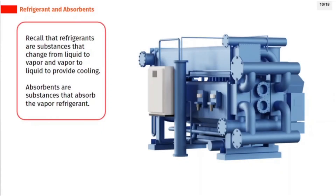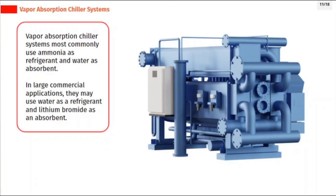Recall that refrigerants are substances that change from liquid to vapor and vapor to liquid to provide cooling. Absorbents are substances that absorb the vapor refrigerant. Vapor absorption chiller systems most commonly use ammonia as refrigerant and water as absorbent.